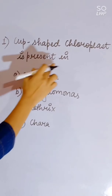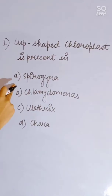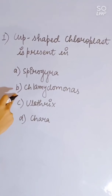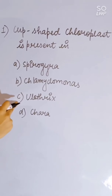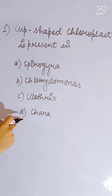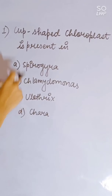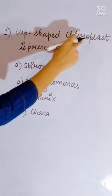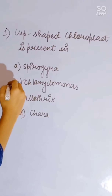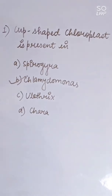Cup-shaped chloroplast is present in: Spirogyra, Chlamydomonas, Ulothrix, or Chara. Chlamydomonas has a cup-shaped chloroplast. Correct answer is B, Chlamydomonas.